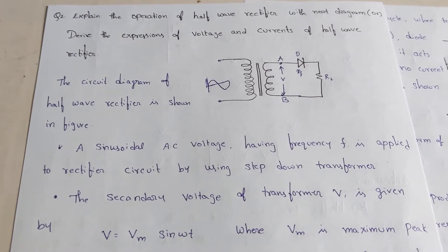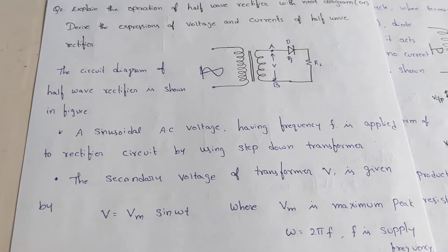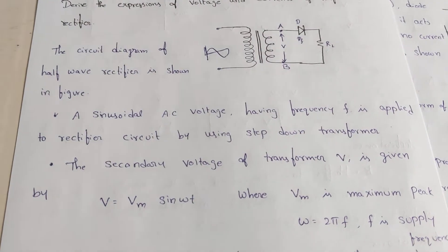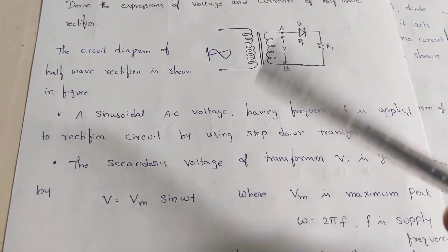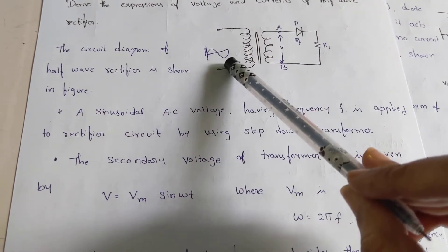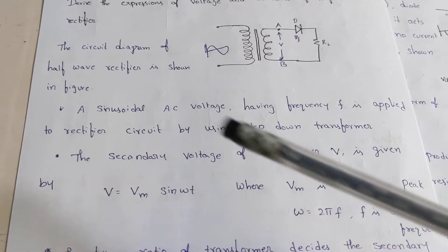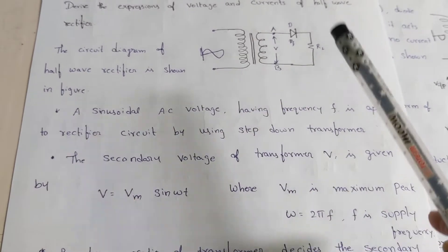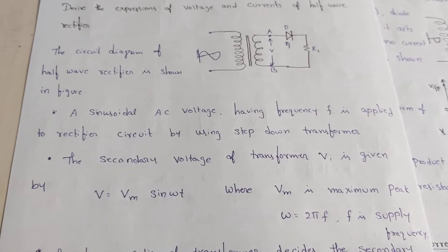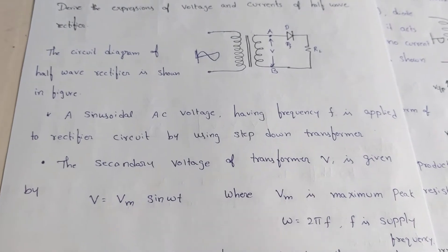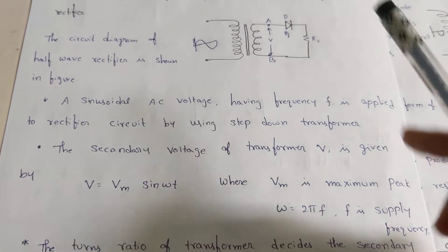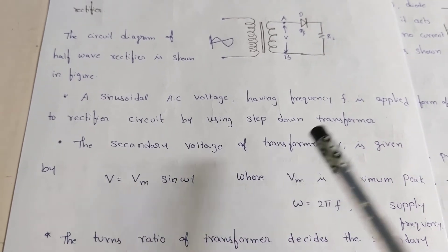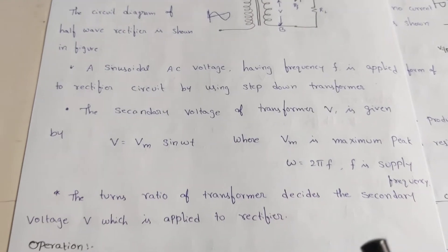The operation of the half wave rectifier will be explained in two ways: first in forward bias condition and second in reverse bias condition. When you apply an AC voltage waveform to your transformer, the secondary of the transformer converts the input voltage as per the turns ratio. The applied voltage is a sinusoidal waveform represented as V = VM sin(ωt), and the same sinusoidal waveform appears at the secondary. The secondary voltage is V = VM sin(ωt), where VM is the peak magnitude and ω is the angular frequency.